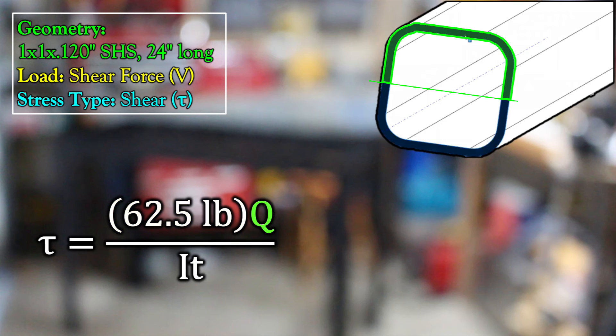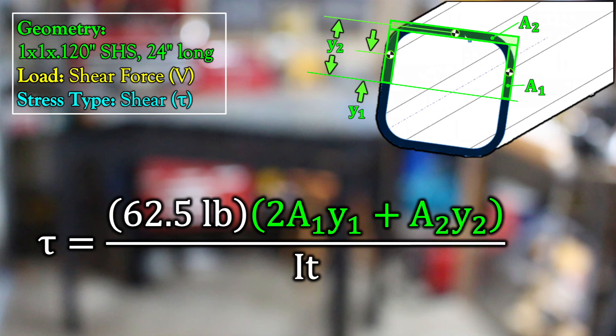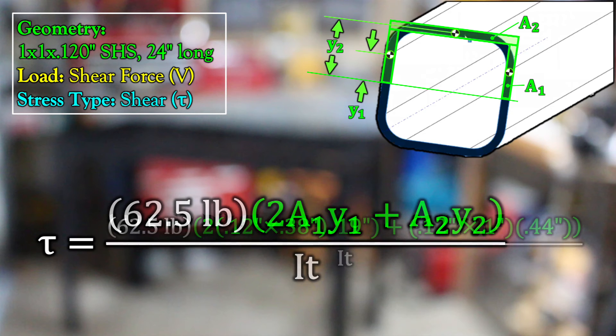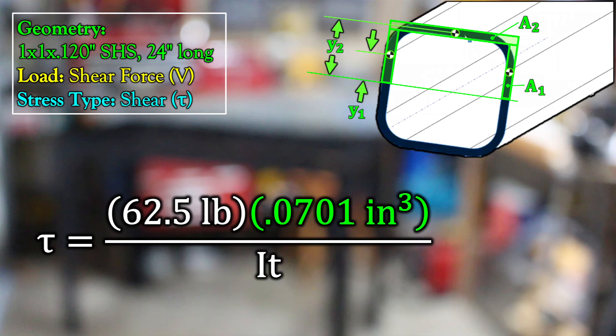We've already found V, that's the 62.5 pounds. The moment of area is a measure of how much area you have above or below the point where you're analyzing. If it's not a simple shape, you break it apart into simple shapes, multiplied by the distance between the little centroids of those individual shapes to the overall centroid of your entire cross section. And for us, that ends up being 0.0701 inches to the third, or cubic inches.